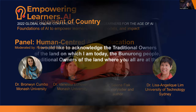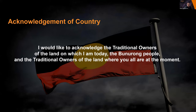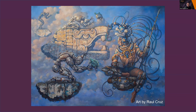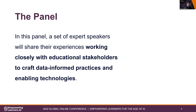Before we dive in, I would like to acknowledge the traditional owners of the land on which I am today, the Wurundjeri people, and the traditional owners of the lands where you all are. I wanted to start this panel with this piece of art that represents the ultimate aim of what we want to discuss today: creating AI, robots, and automated agents that serve us, especially in education — that serve teachers and students.